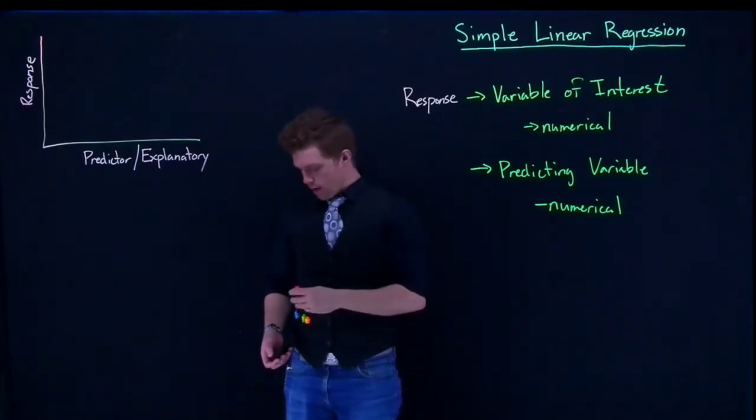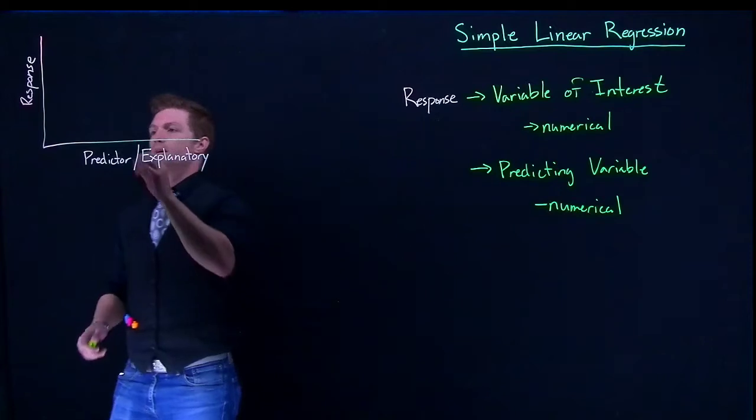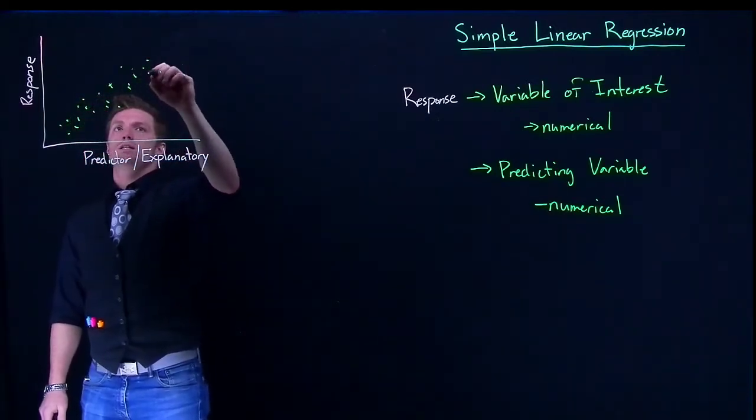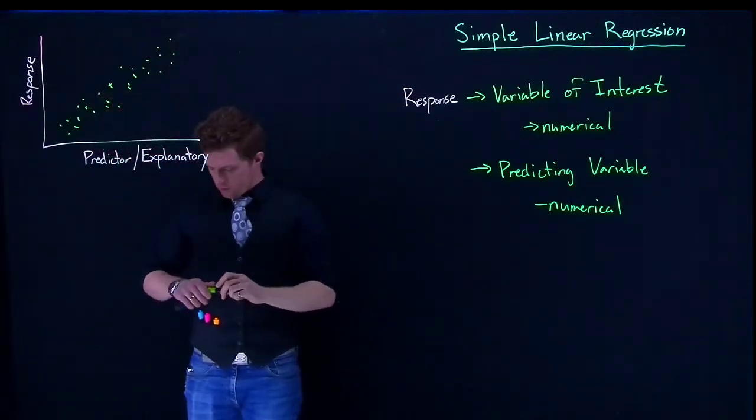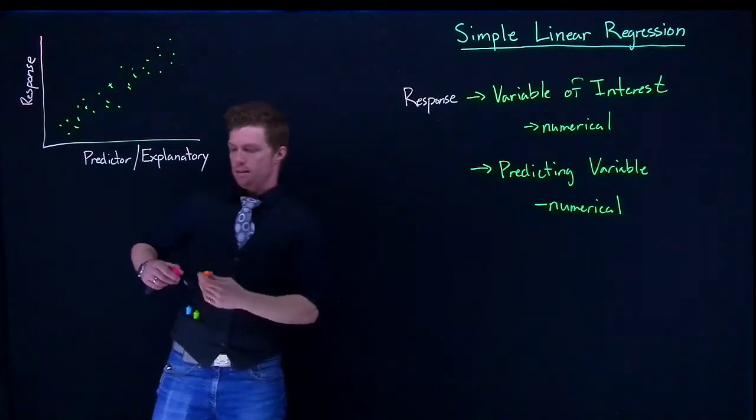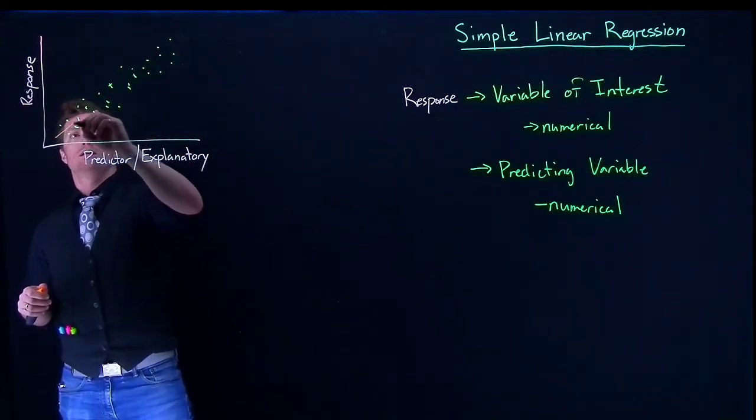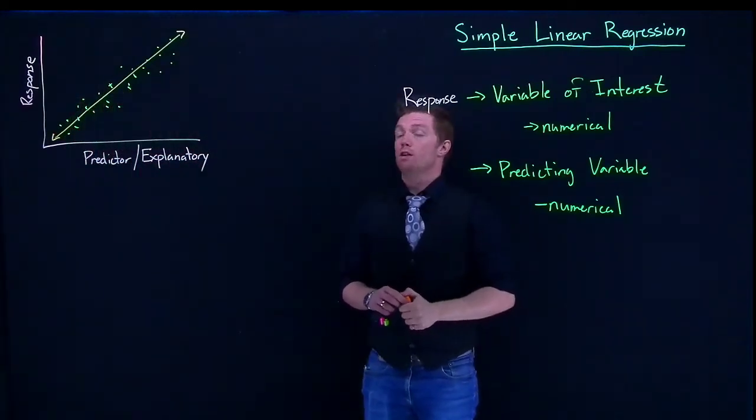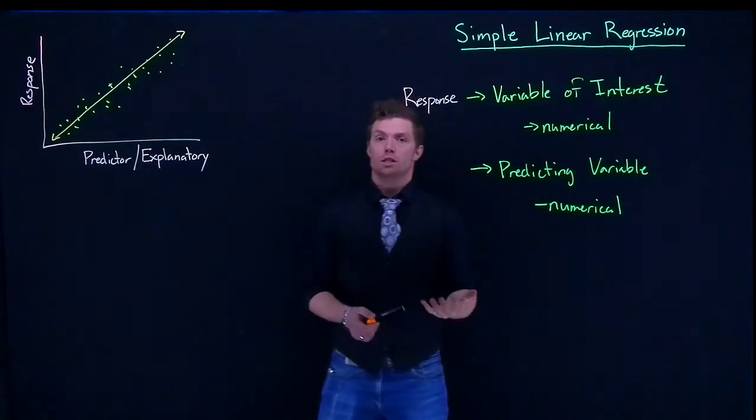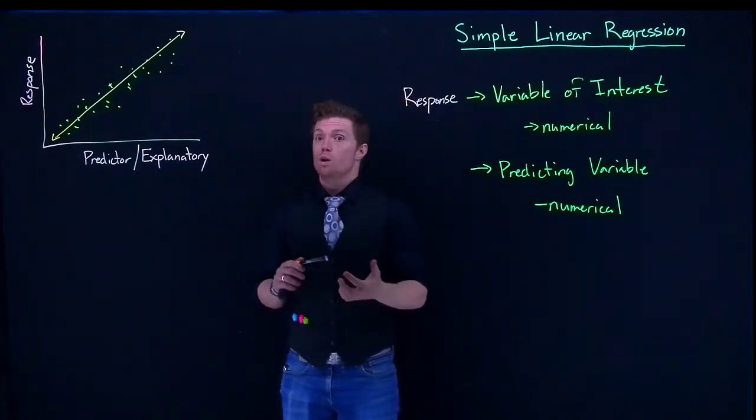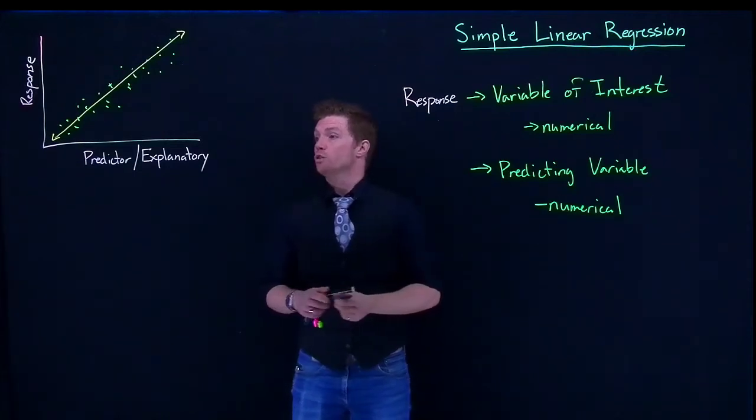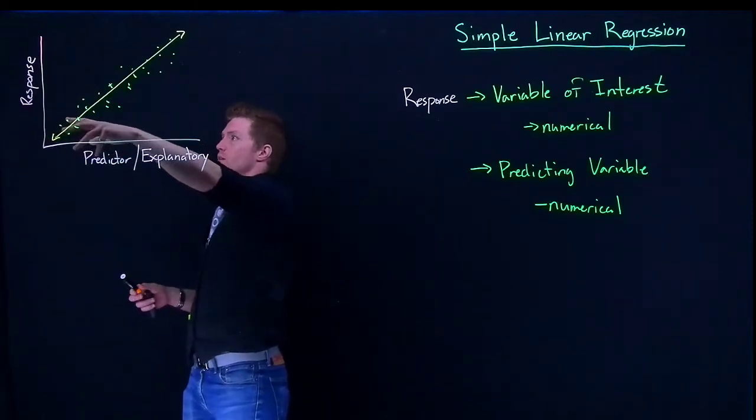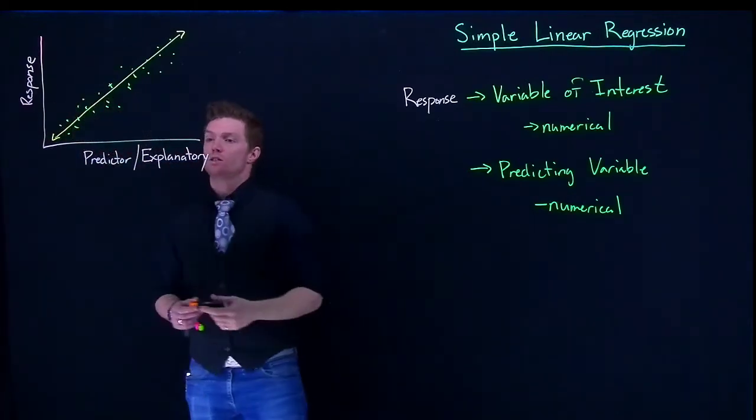What simple linear regression is basically saying is, can we take some sort of data, maybe we get some collection, and can we fit a line to this data? Is there some sort of line of best fit that does a good job of predicting what's actually going on? That's what our linear regression is actually trying to do. It's trying to take some predictor and make some prediction of what the response is going to be.